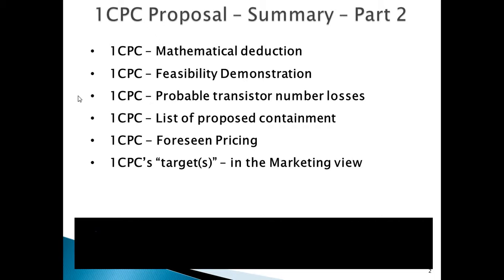Part 2 covers the following topics: One CPC Mathematical Deduction, One CPC Feasibility Demonstration, One CPC Probable Transistor Number Losses, One CPC List of Proposed Containment, One CPC Foreseen Pricing, and One CPC's Targets in the Marketing View.